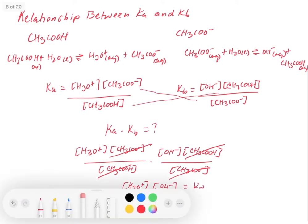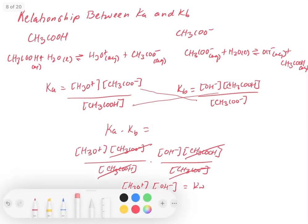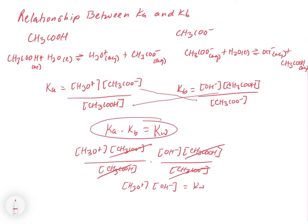So it turns out that when you multiply Ka times Kb, we get Kw. And so now we have an equation that allows us to interconvert Ka and Kb. So if we know a Ka, we can calculate Kb by taking Kw divided by Ka to give Kb, or vice versa.